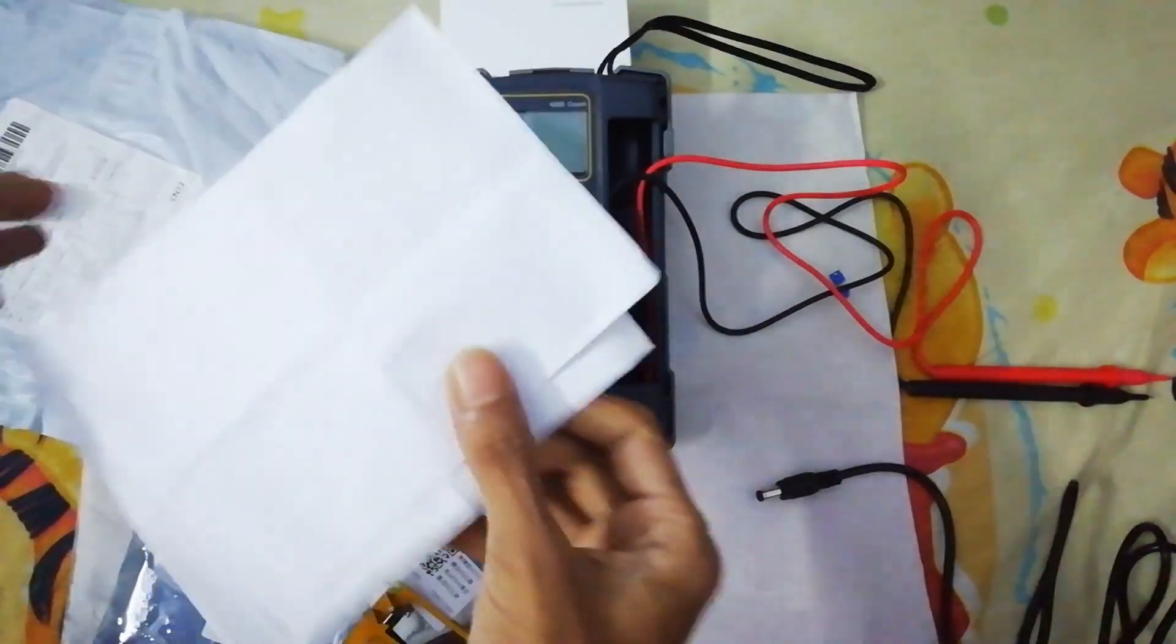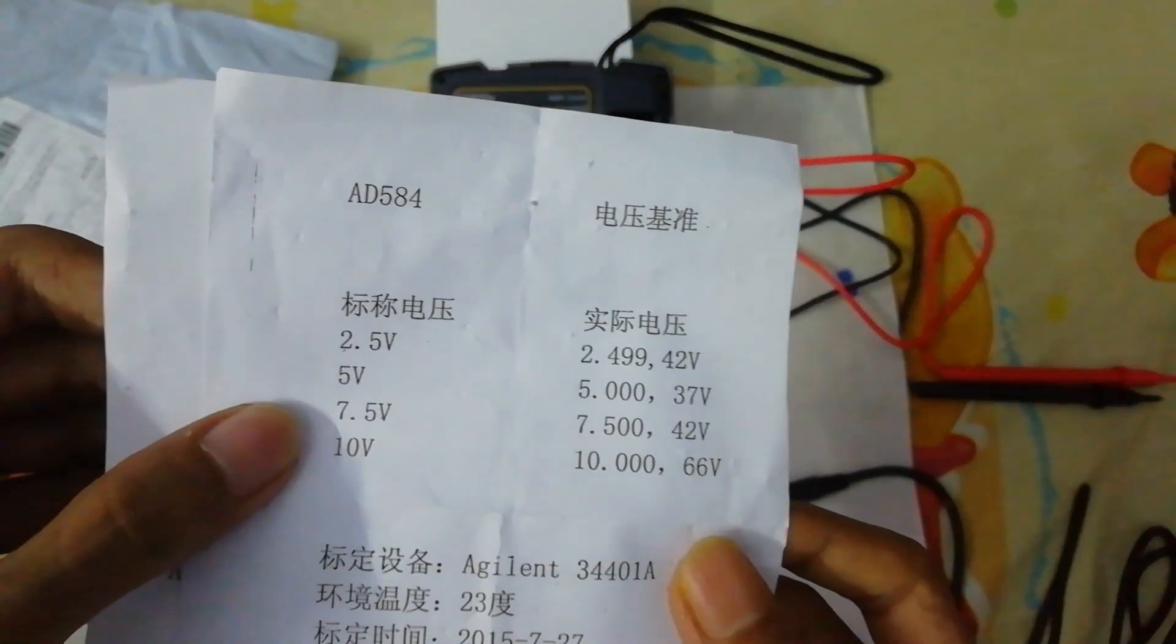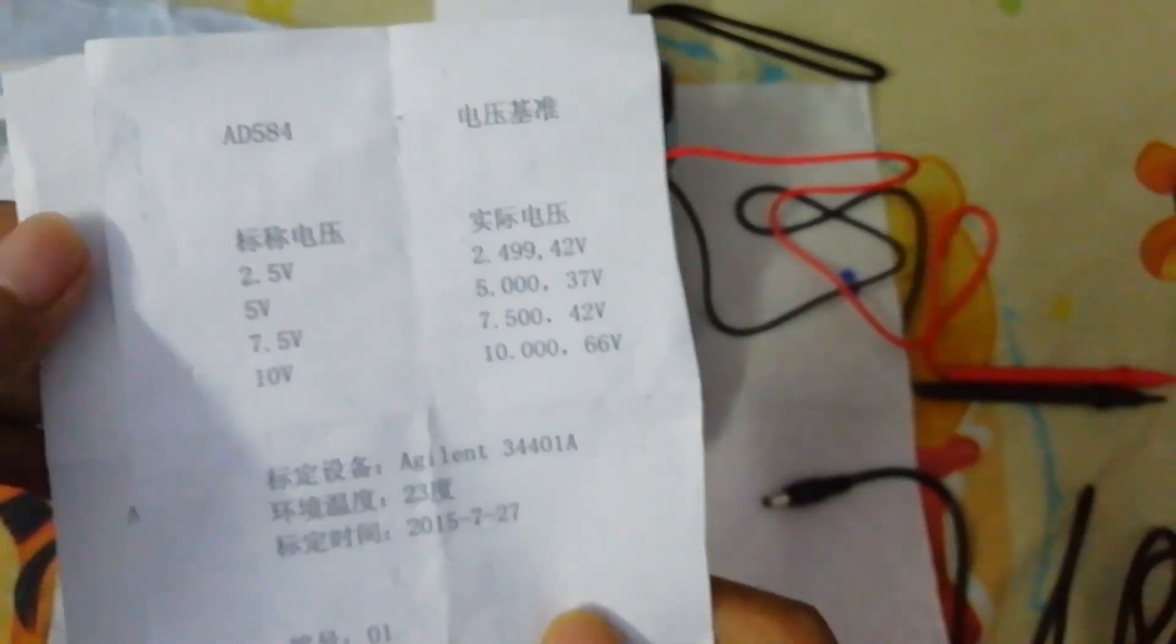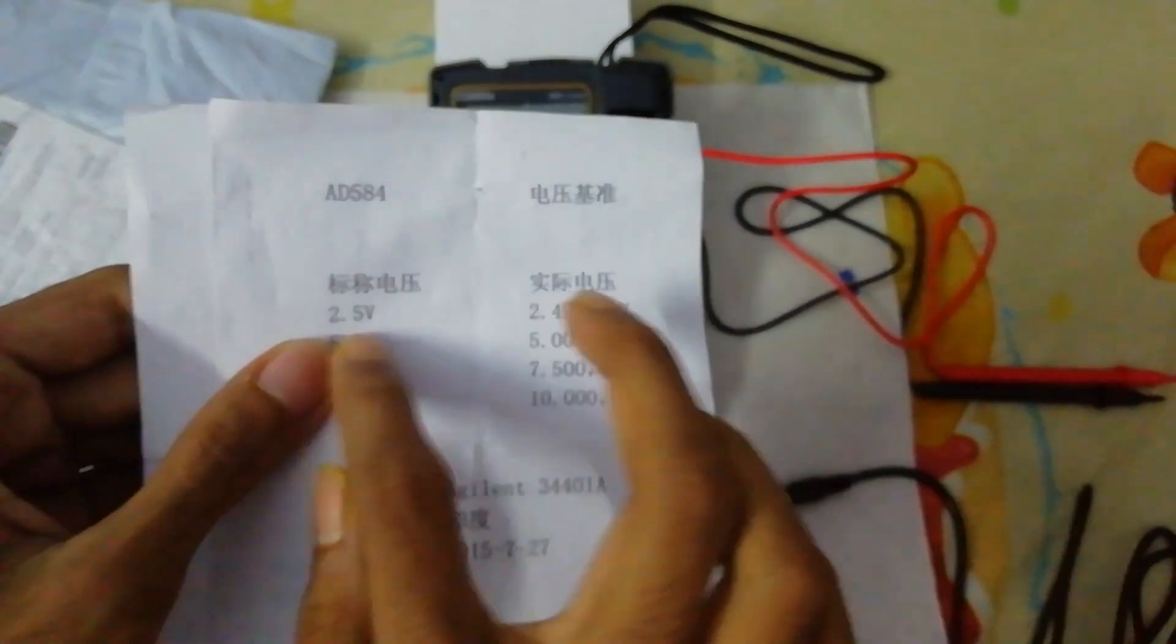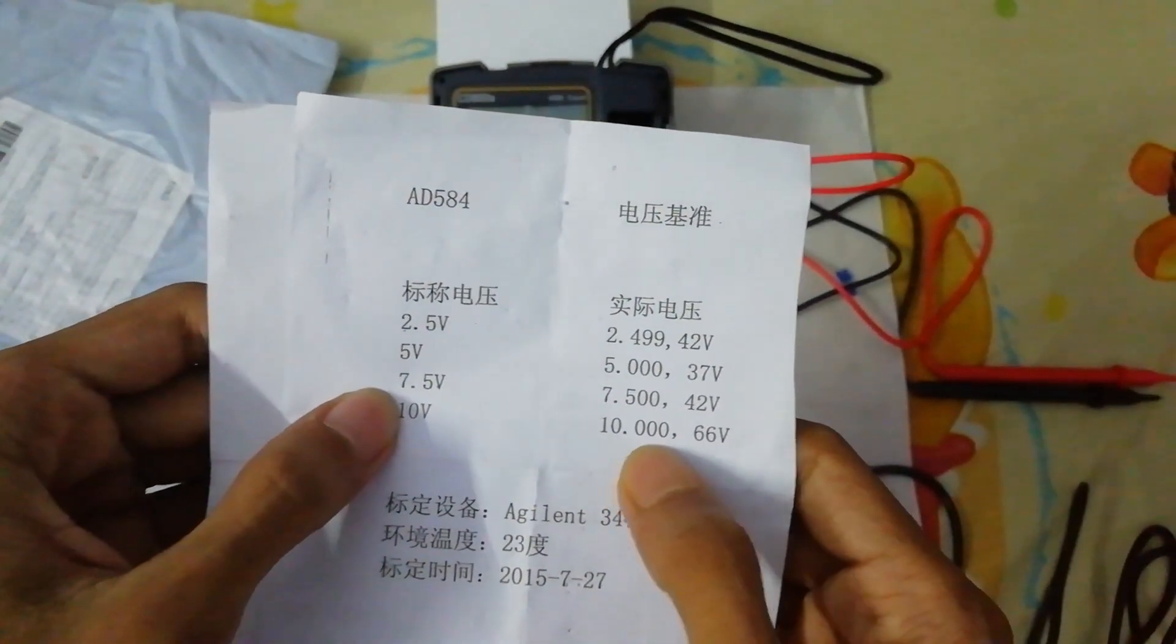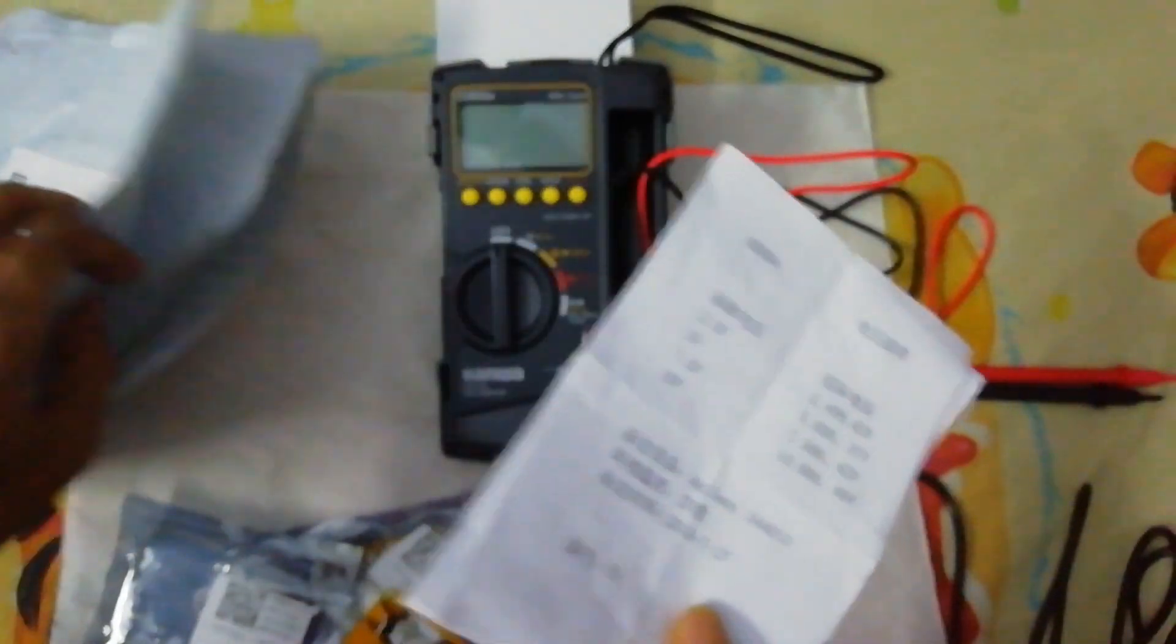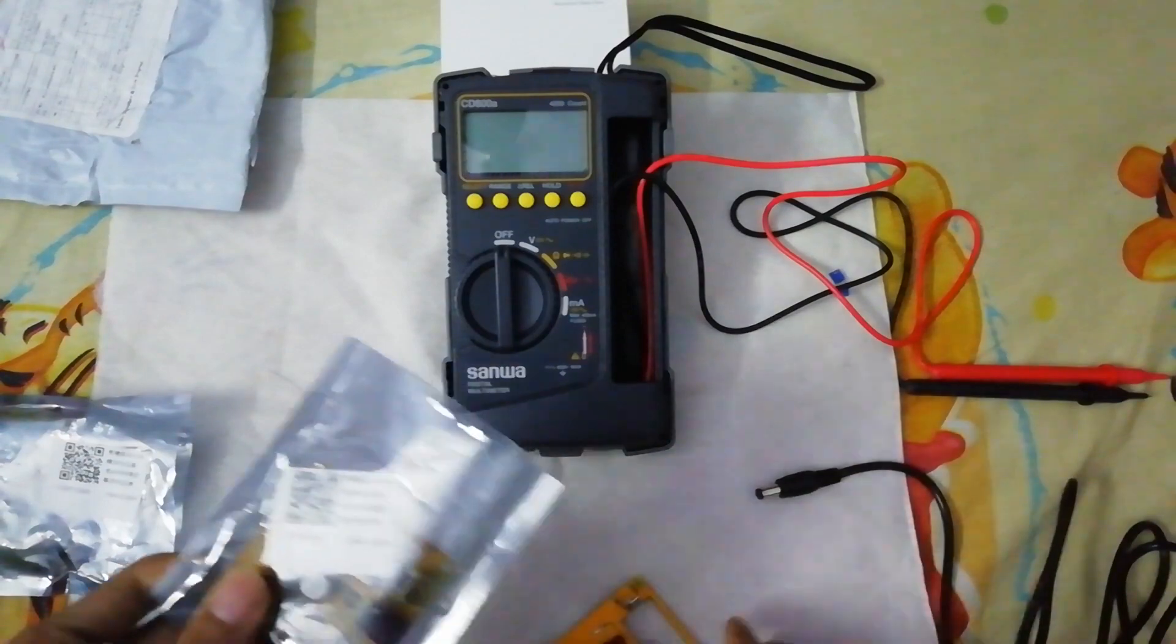I have two of these, they are actually the same. This also comes with two pieces of papers which I don't believe because they are not honest, they are not accurate I think. For 2.5 volt here it says 2.499, 5 volt 5.00, 7.500, 10.00, and this was measured by Agilent 34401A.